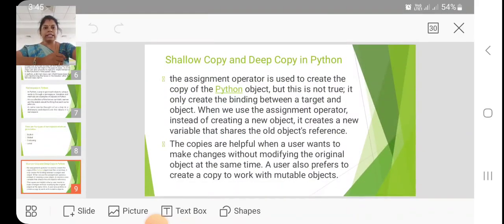Shallow copy and deep copy in Python. The assignment operator is used to create the copy of the Python object, but this is not true. It only creates the binding between the target and the object. When we use the assignment operator, instead of creating a new object, it creates a new variable that shares the old object's reference.